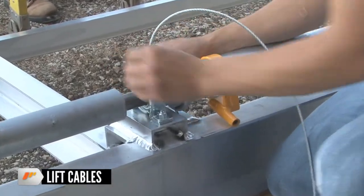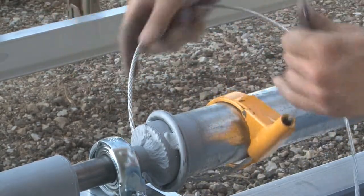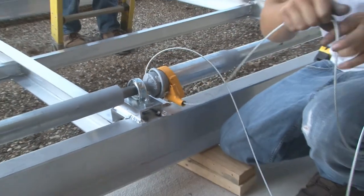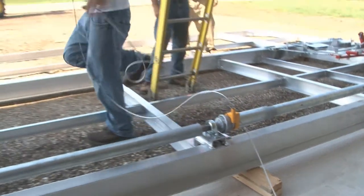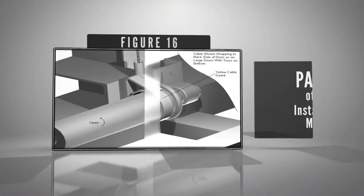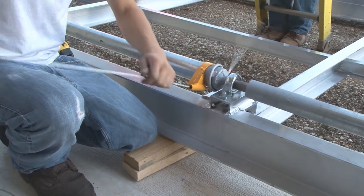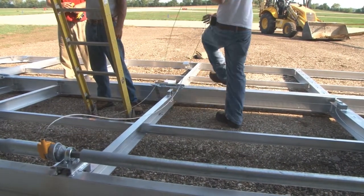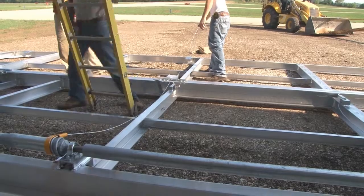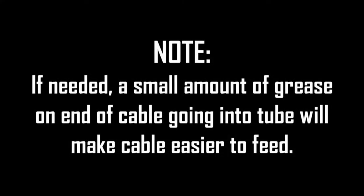Feeding lift cables. Feed the cable up tight to the tube. See Figure 16 and 17. Repeat this for each lift cable. Note: if needed, a small amount of grease on end of cable going into tube will make cable easier to feed.